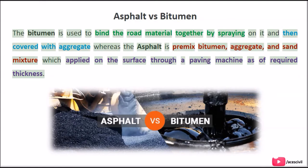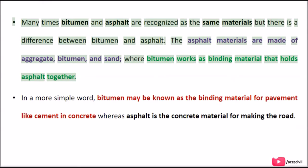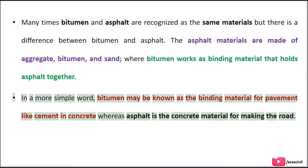Bitumen is used to bind the road material together by spraying on it and then covering it with aggregate, whereas asphalt is a pre-mixed bitumen, aggregate, and sand mixture which is applied on the surface through a paving machine at the required thickness. Many times bitumen and asphalt are recognized as the same materials, but there is a difference between them. In simple terms, bitumen may be known as the binding material for pavement — like cement in concrete — whereas asphalt is the concrete material for making the road.